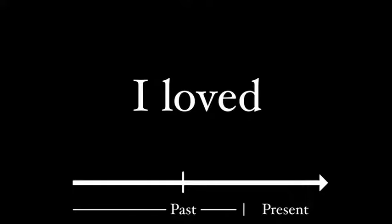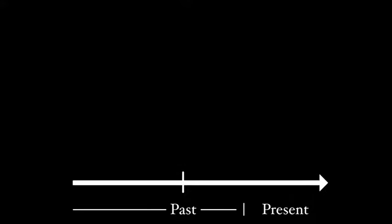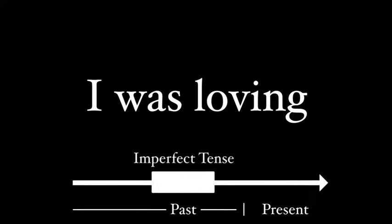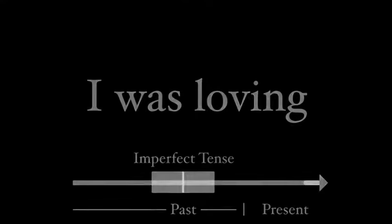There are two different types of past tenses in Latin. There's the simple past — a statement like 'I loved' — something completed that happened at one time in the past. This is construed by the perfect tense in Latin. Then there is the continual or habitual past, a statement like 'I was loving.' This is represented by the imperfect tense in Latin. This video will cover the ways to form the imperfect tense.